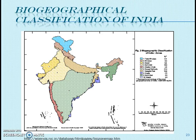India has a total of 10 biogeographical zones. The first zone is the Trans-Himalayan region, also called the cold desert, which includes the Ladakh district of Jammu and Kashmir and some districts of Himachal Pradesh. The second region is the Himalayan region.